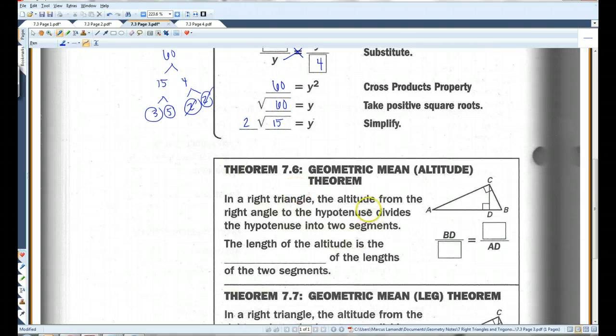Geometric mean. In a triangle, the altitude from the right angle to the hypotenuse divides the hypotenuse into two segments. The length of the altitude is the geometric mean of the segments, of the length of the two segments. So BD over CD equals CD over AD.